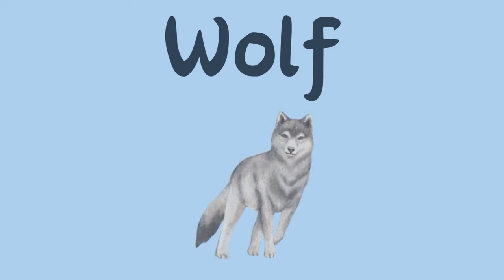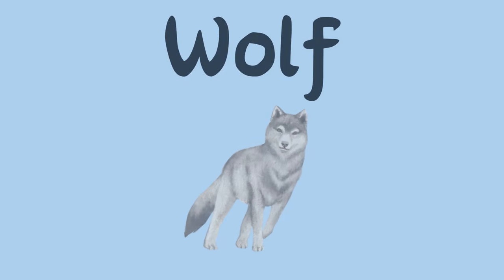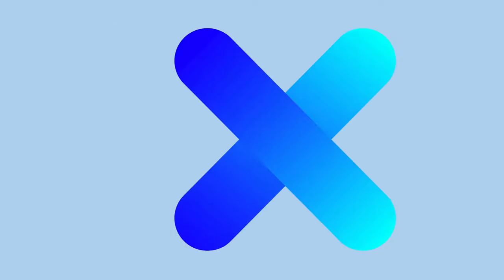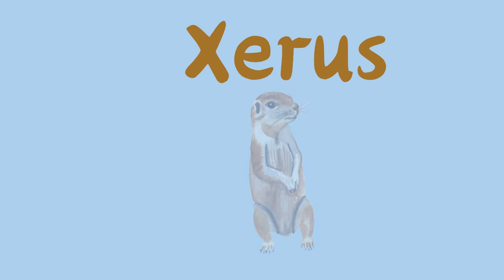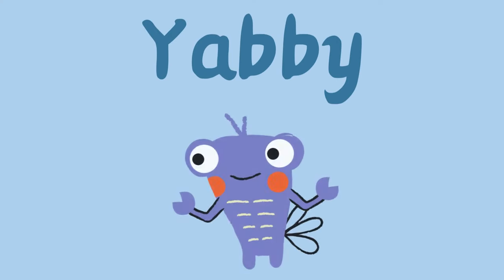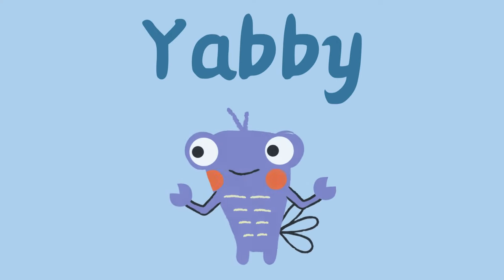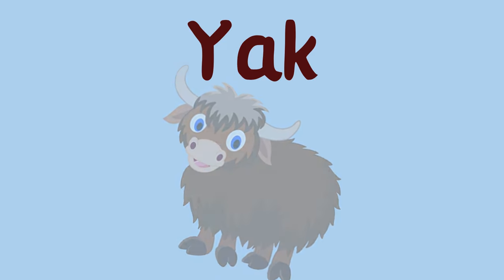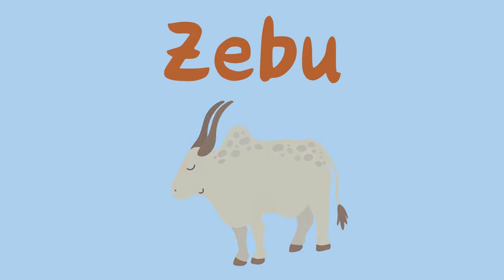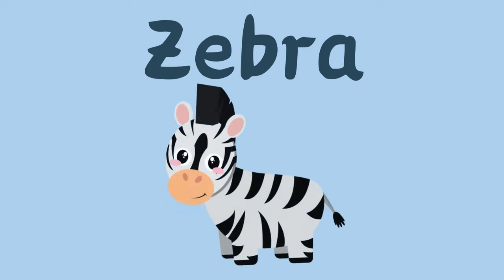W is for Wolf. W is for Whale. X is for Xerus. Y is for Yabby. Y is for Yak. Z is for Zebu. Z is for Zebra.